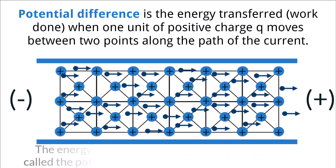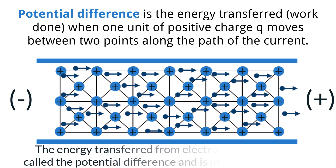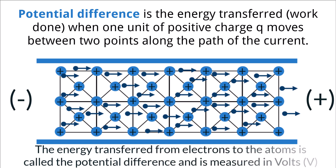This transfer of energy due to the collisions is called the potential difference and is measured in volts. A large potential difference means that there is a greater amount of energy transfer occurring between the electrons and the positive atoms.